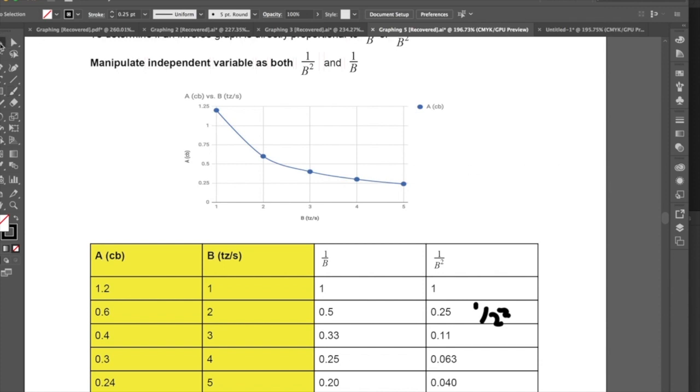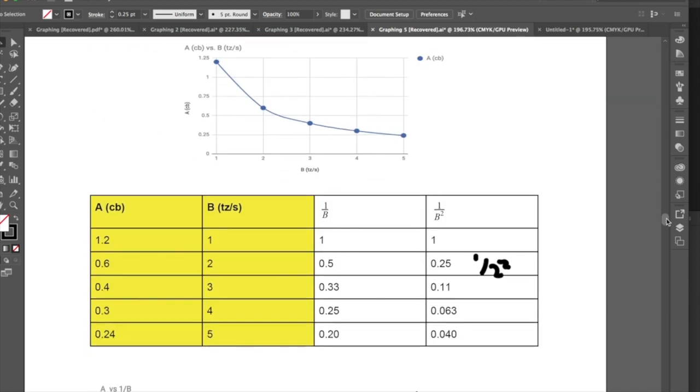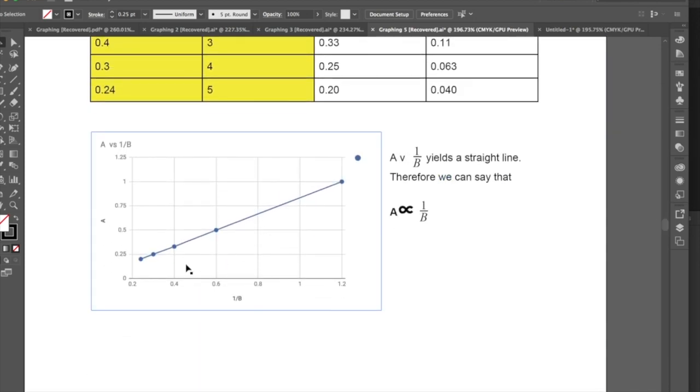So what we can do is if we use these results and we graph them, if we look at the graph for a versus 1 over b, we see that it yields a straight line. So what this tells us is that there is a direct relationship between a and the inverse of 1 over b. So we can say that a is directly proportional to the inverse of b. a is directly proportional to 1 over b because a and 1 over b have a direct linear relationship. So from here we can make an equation and we can predict what the next a value would be based on the 1 over b.